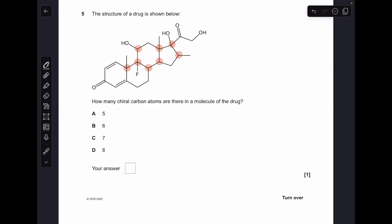Number five. There's all the chiral centres in this drug. And when you count them up, there's eight. So the answer was D.